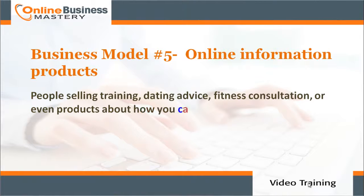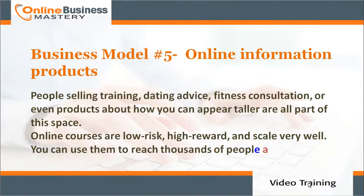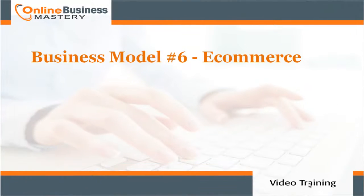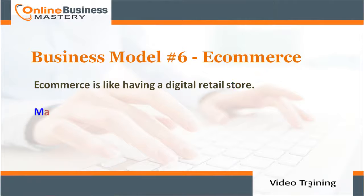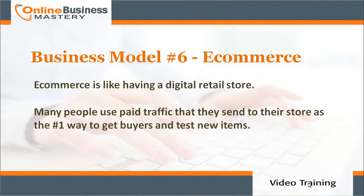Business model number five: online information products. People selling training, dating advice, fitness consultation, or even products about how you can appear taller are all part of this space. Online courses are low risk, high reward, and scale very well — you can use them to reach thousands of people all over the world.